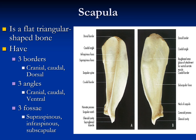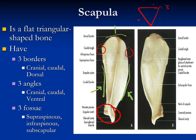Now we will talk about the scapula. The scapula is triangular in shape. It has three angles — the cranial angle, the caudal angle, and the ventral angle — and three borders — the cranial border, the caudal border, and the dorsal border. The scapula has two surfaces: the lateral surface and the medial surface. Usually the sharp edges are found on the lateral surface as protection from friction and injury, while the medial surface is almost smooth.